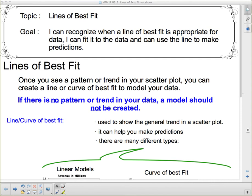So once you see a pattern or trend in your scatter plot, you can create a line or curve of best fit to model your data. Now, you created a scatter plot yesterday, and hopefully you saw a pattern in that data. The pattern you should have seen in that data was that as the person's foot gets bigger, they're actually a taller person. So the bigger the foot, the taller the person.